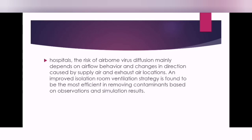In hospitals, the risk of airborne virus diffusion mainly depends on airflow behavior and changes in direction caused by supply air and exhaust air location. Improved isolation room ventilation strategy is found to be the most efficient in removing contaminants based on observation and simulation results. An isolation room is the best way to treat coronavirus — supply the air and exhaust the total air of the room so there will be no return of room air to mix with the supply air.